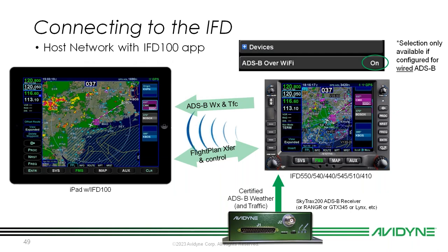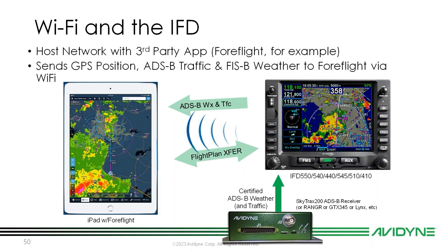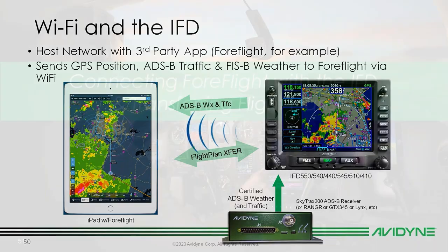Regarding ADS-B over Wi-Fi: in order to get traffic and weather over to your iPad from your IFD, and if you have a certified hardwired ADS-B receiver such as a Skytrax 200, under devices you will see a selection called "ADS-B over Wi-Fi." Make sure that is turned on. If you're getting traffic and weather from your ADS-B receiver, you'll want to turn on ADS-B over Wi-Fi to send that information over your Wi-Fi network to your iPad. With ForeFlight, we'll also have the ability for flight plan transfer in and out from that iPad if we are using a certified ADS-B receiver.